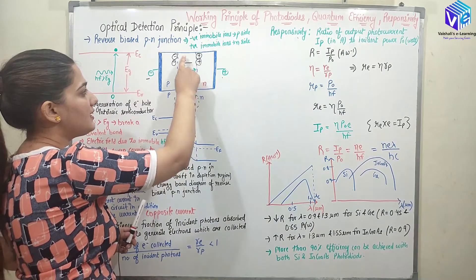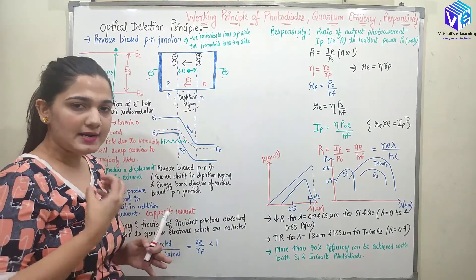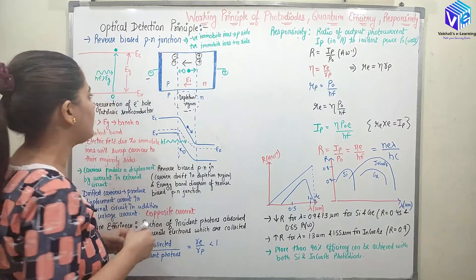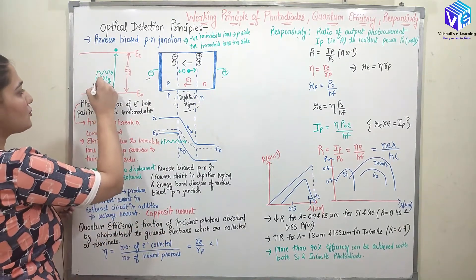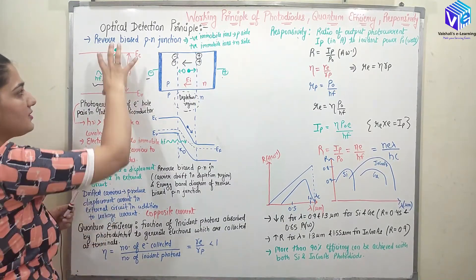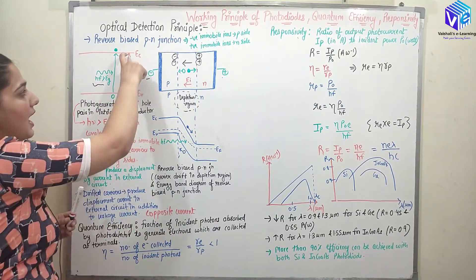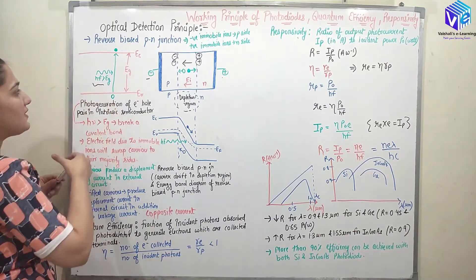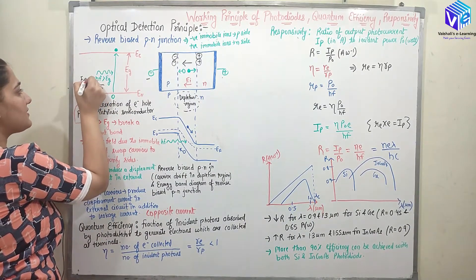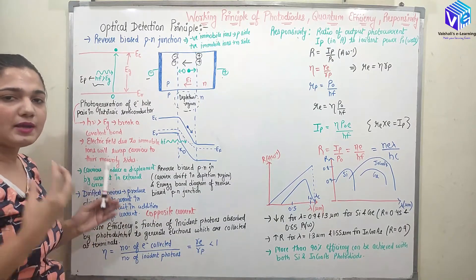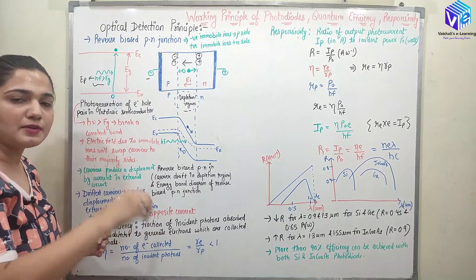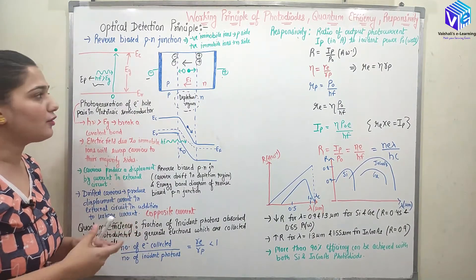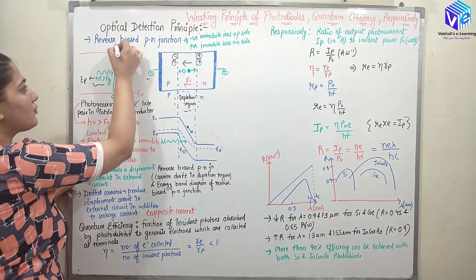Now we are sending light as the input — sending a photon. Whenever the photon has energy greater than H-nu, or the energy is greater than the band gap energy Eg. This is the energy band diagram: this is the valence band, this is the conduction band, and this is the energy gap. So if I am supplying a photon which has energy greater than the energy gap — Hf is the energy of the photon, I can represent it as Ep — Hf is greater than Eg.